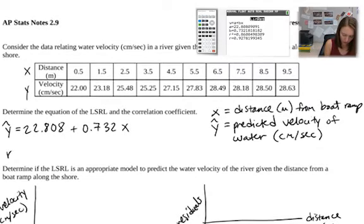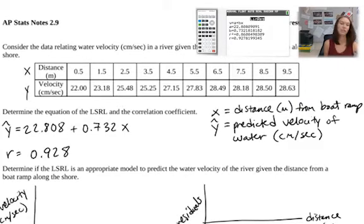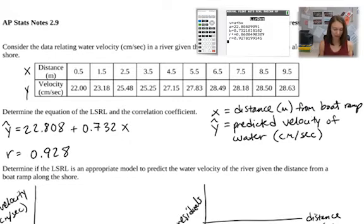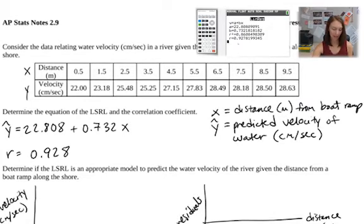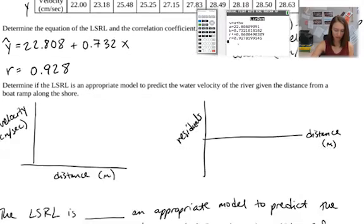My line is y-hat equals 22.808 plus 0.732x. My correlation coefficient r is 0.928 — use at least three decimals. It seems really strong, but we can't just rely on how strong r is. We have to check the scatter plot and the residual plot to make sure all conditions are met.